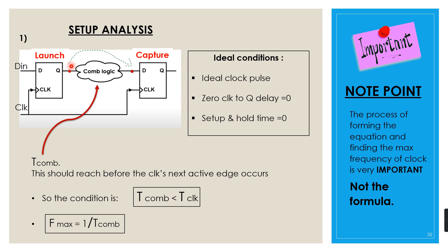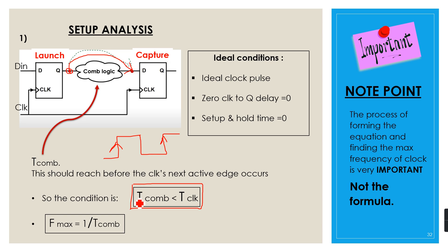The time taken for the output of the launch flop to propagate and reach the input of the capture flop is the combinational delay T_comb. On the active clock edge, the flip-flop passes data to its output, and this output must reach the capture flop input before the next active clock edge. So we arrive at the relation: T_comb < T_clock, or equivalently, maximum frequency = 1 / T_comb. For example, if T_comb = 5 ns, the maximum frequency is 1/5 ns = 200 MHz.